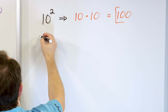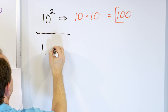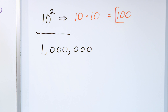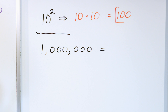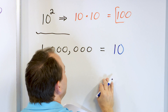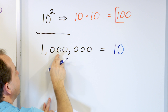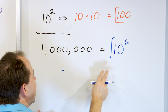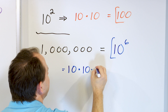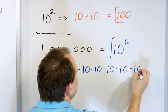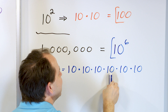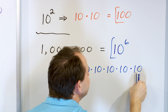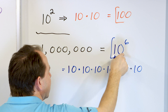Let's convert one million to a power of ten. We can write it as ten raised to the power equal to the number of zeros: one, two, three, four, five, six — ten to the power of six. Ten to the power of six means ten times ten times ten times ten times ten times ten, all six of them multiplied together. Ten times ten is a hundred, times ten is a thousand, times ten is ten thousand, times ten is a hundred thousand, times ten more is a million.